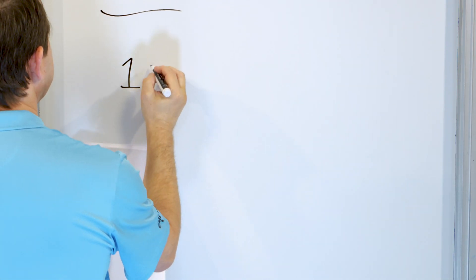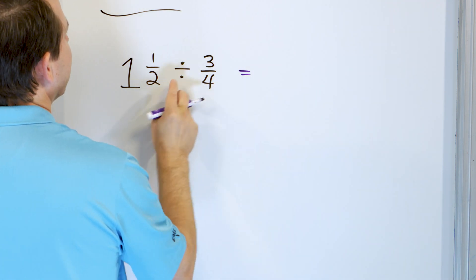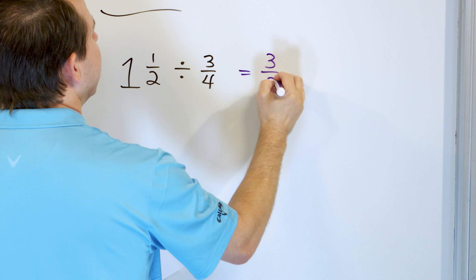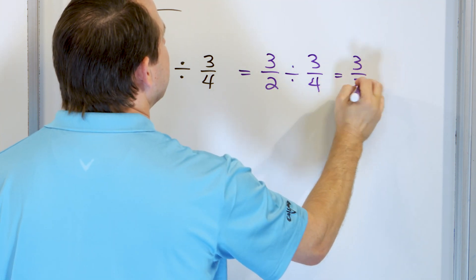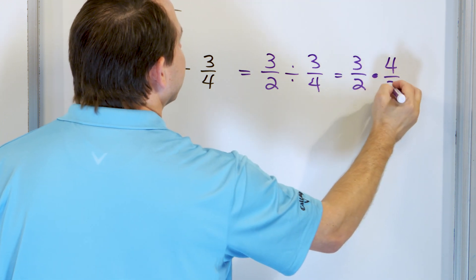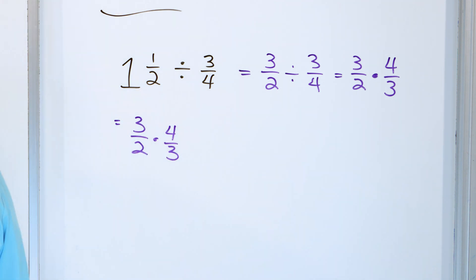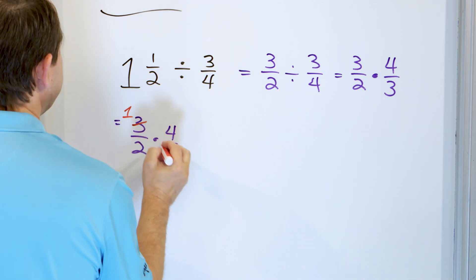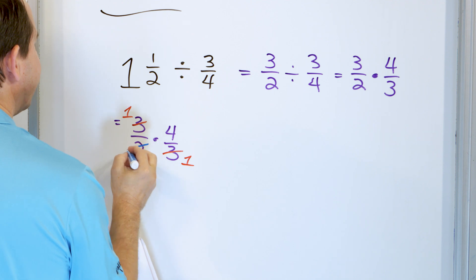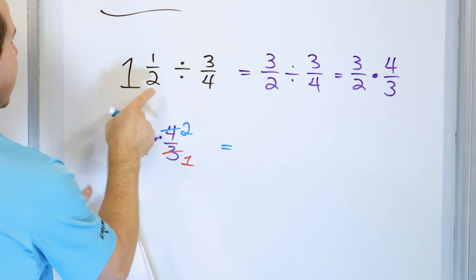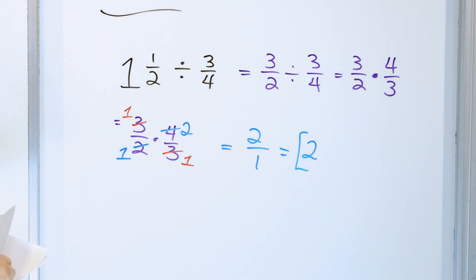How about a mixed number: one and one-half divided by three-fourths? First step is always to change the mixed number to improper. Two times one is two, plus one more is three over two. Keep it as division for now: three-halves divided by three-fourths. Now change to multiplication and flip: three-halves times four-thirds. Rewriting: I see a three and a three — divide: one and one. I also see a four and a two — divide by two: two becomes one, four becomes two. One times two is two on top, one times one is one on the bottom — two divided by one is two. The answer is exactly two.